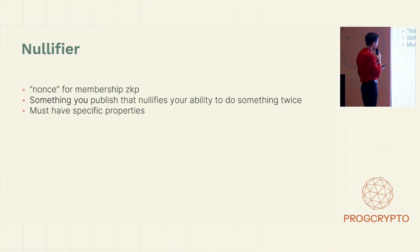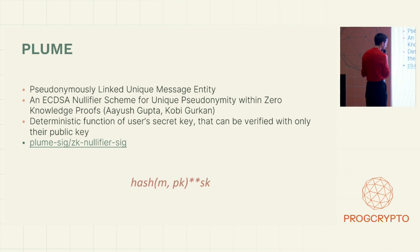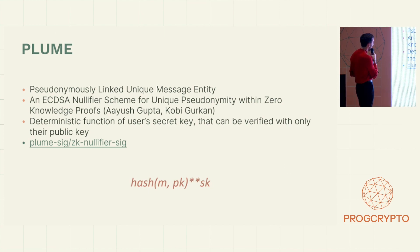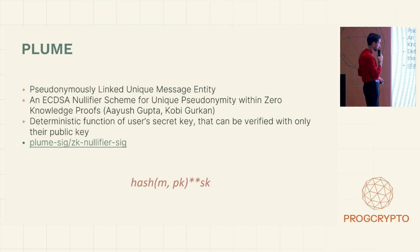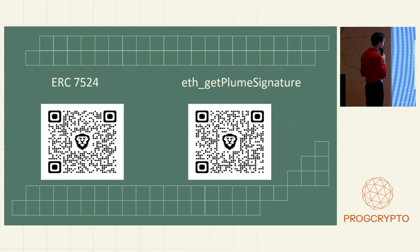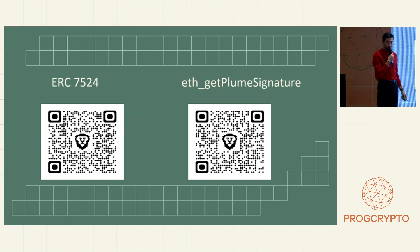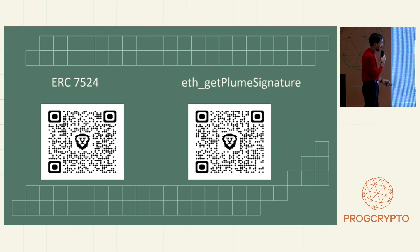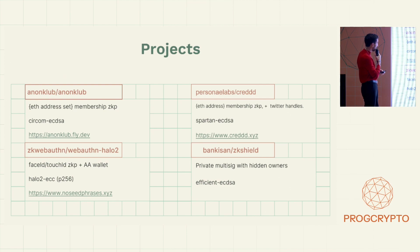The nullifier needs specific properties: being unique, deterministic, and not requiring the secret key for verification. These properties are hard to achieve for ECDSA, especially because ECDSA involves randomness. The most promising solution for this nullifier challenge is PLUME — Pseudonymously Linked Unique Message Entity — an ECDSA nullifier scheme built by Ayush Gupta and Kobé Gokan. It fulfills the properties we were looking for. Key links here are two pull requests: one is the PLUME ERC, and the other adds a JSON-RPC method to MetaMask. I'm looking forward to them being merged because they will unlock a lot of cool applications.